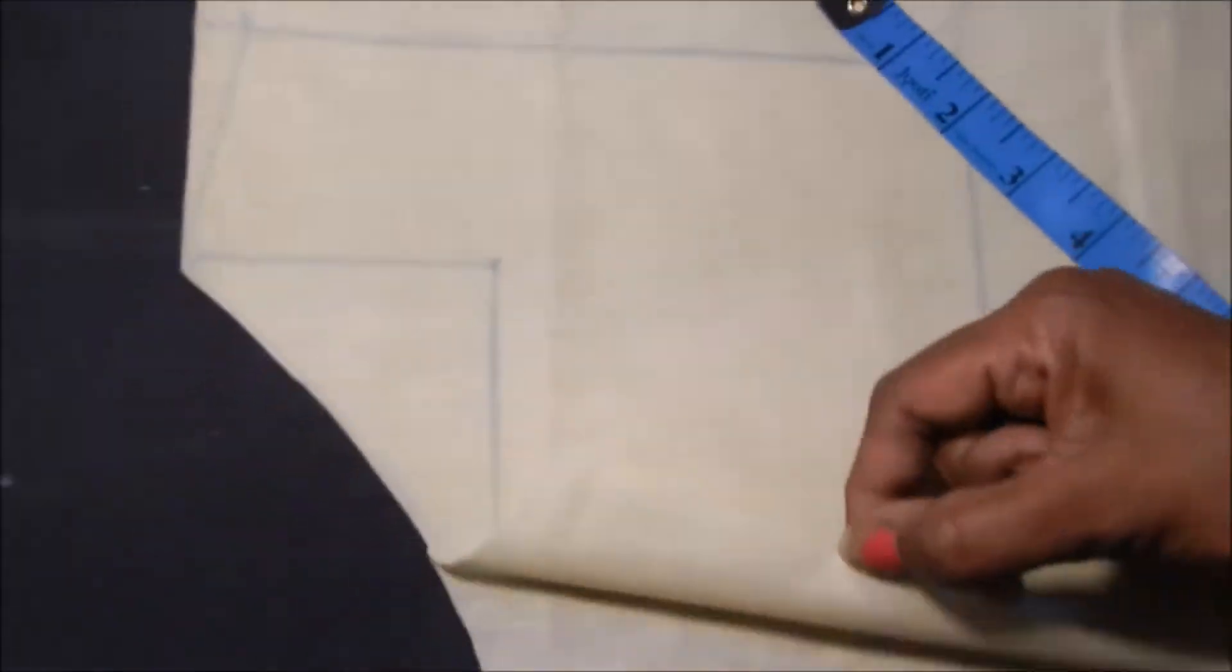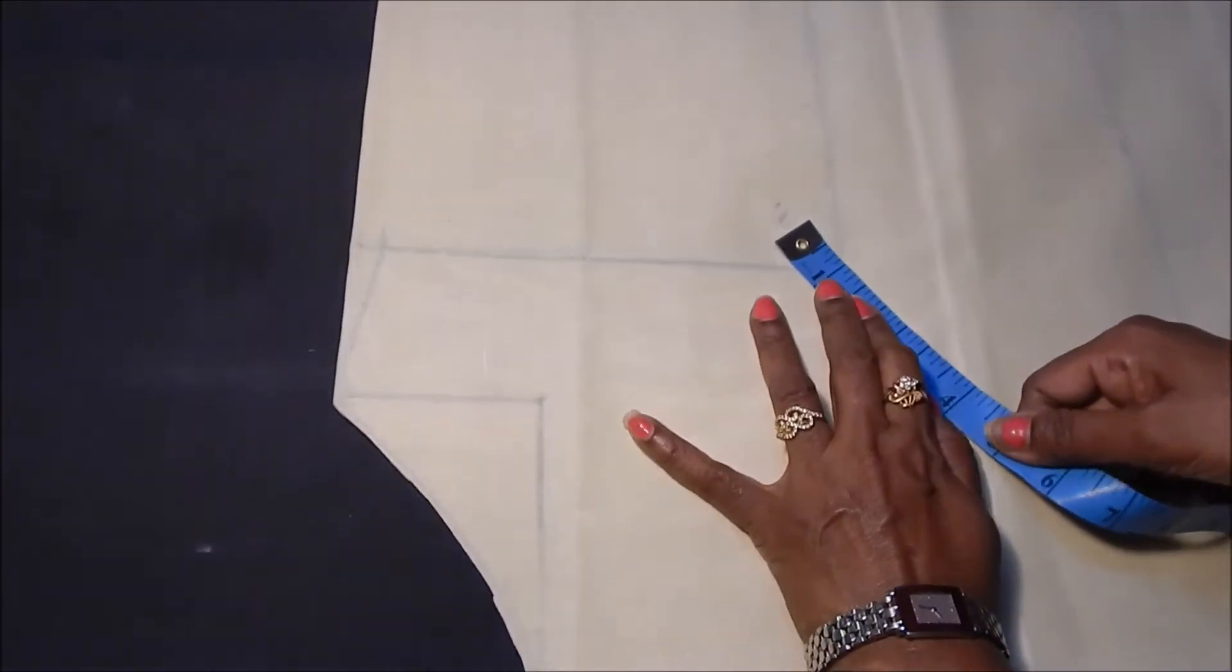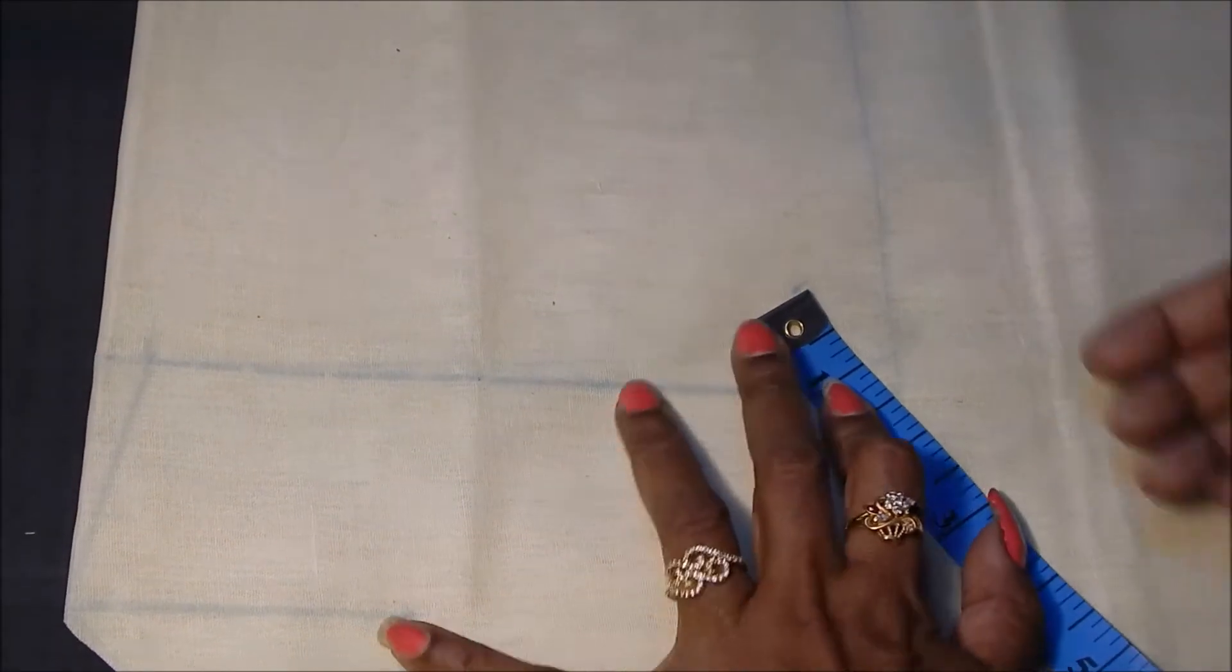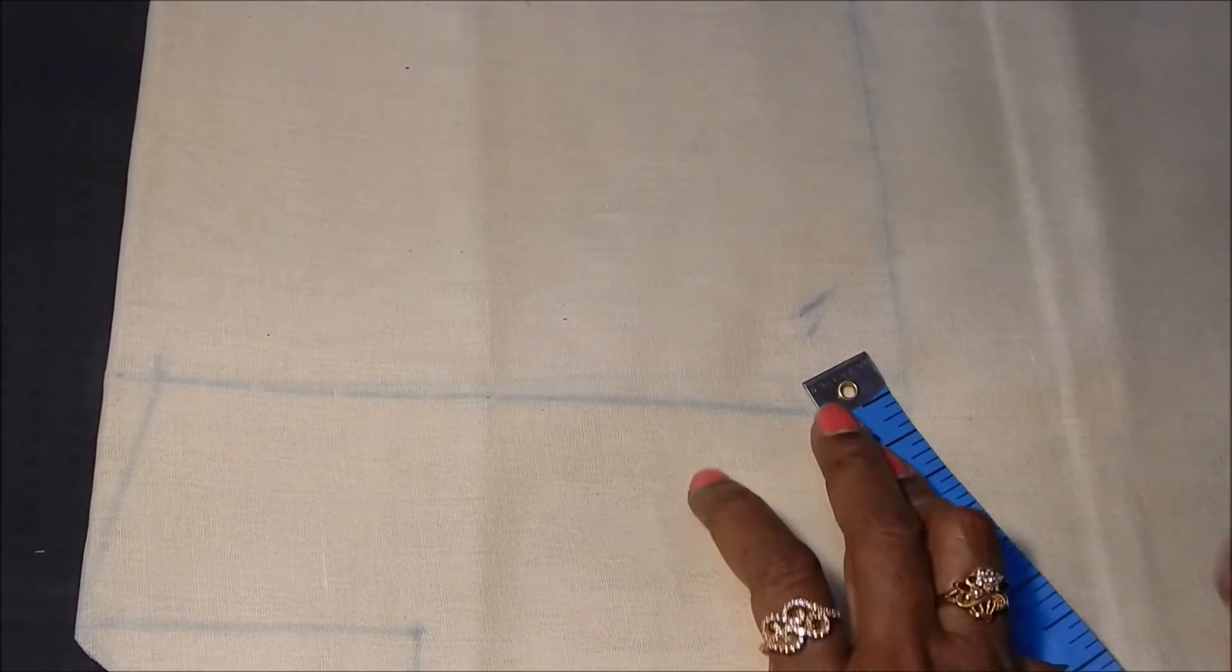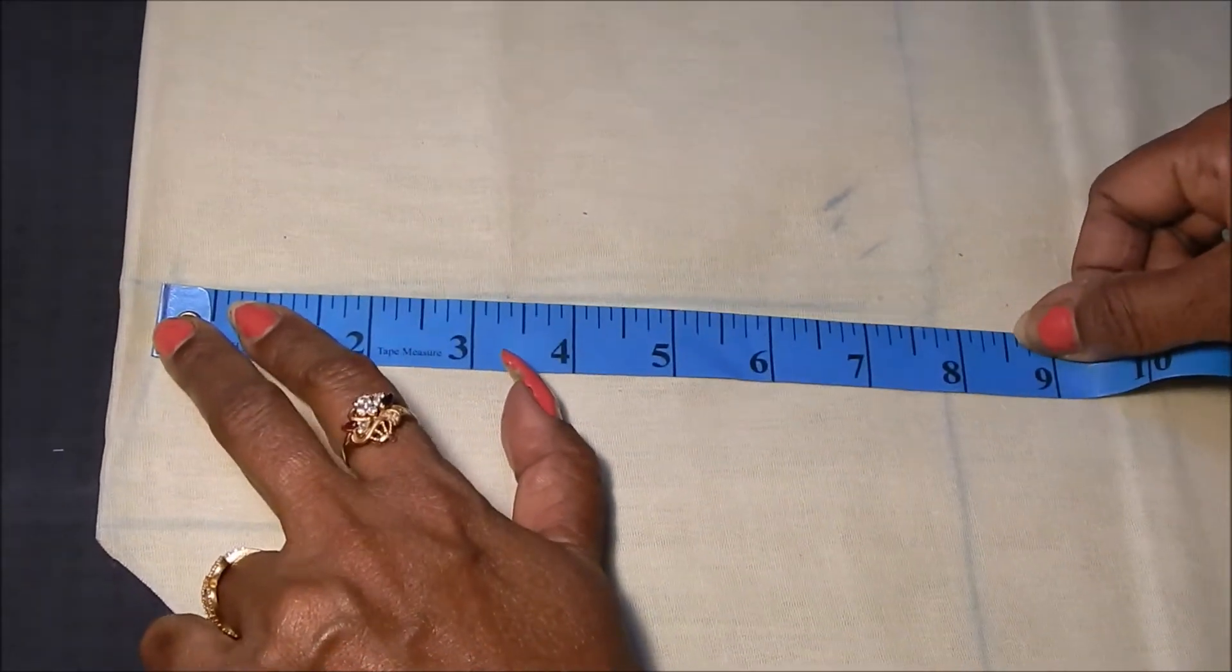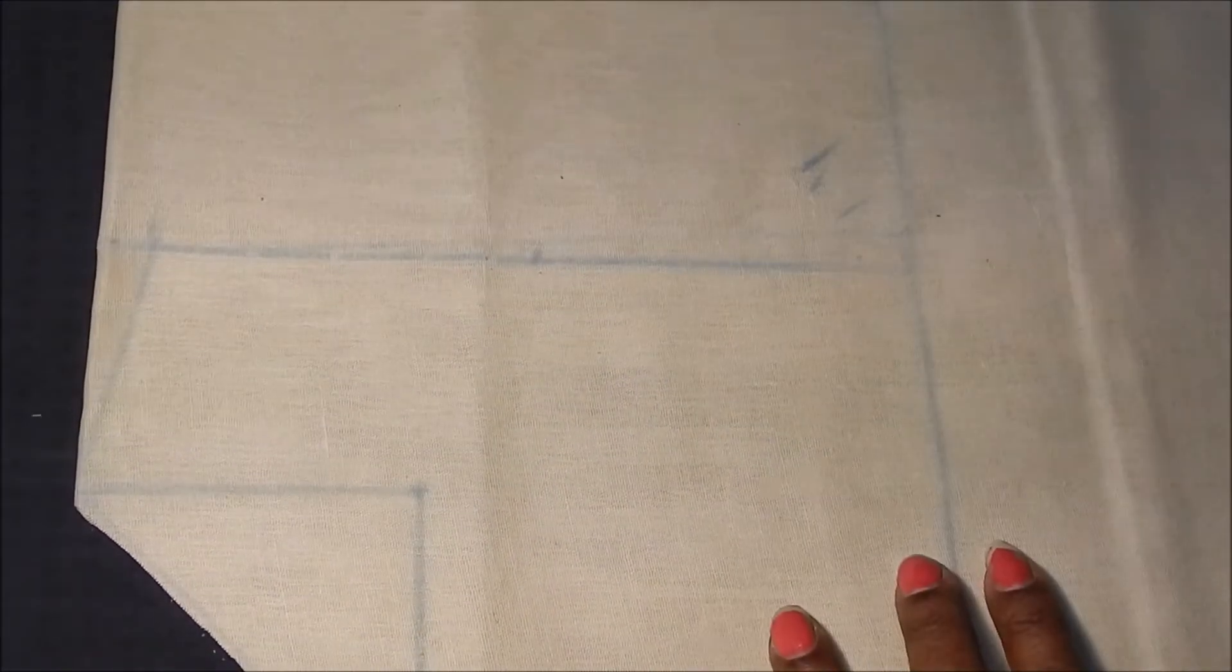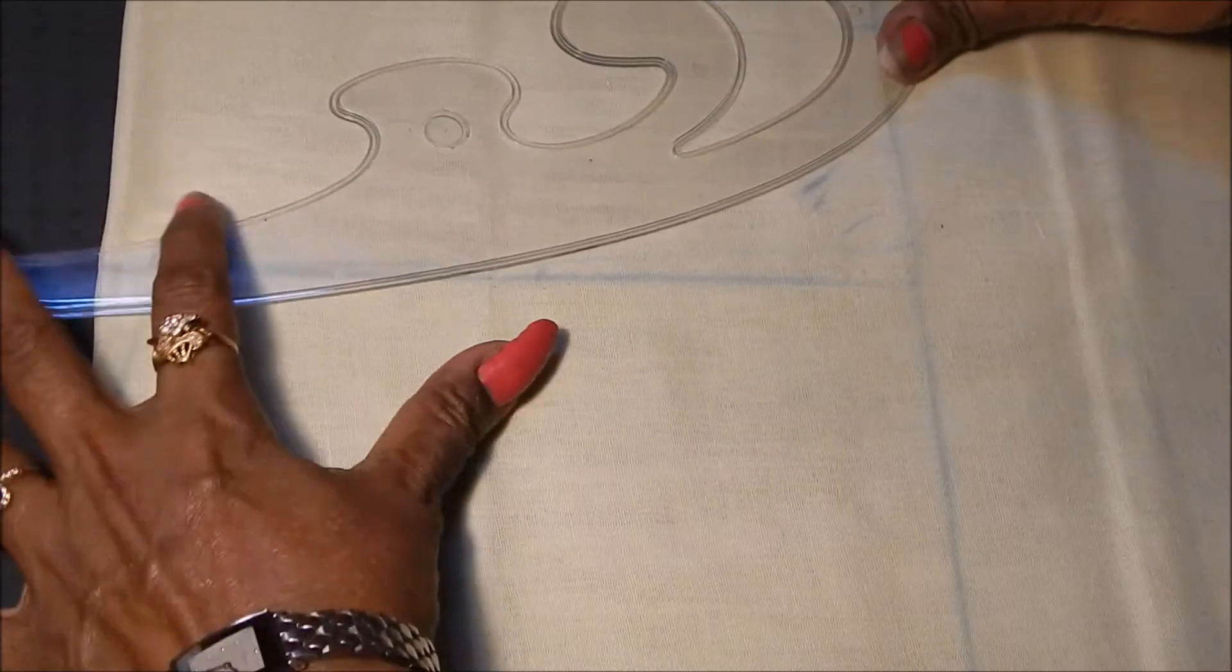Now we will mark from the corner of the armhole box. Mark back armhole at the distance of one and a half inches and for the front armhole three by four inches. Midpoint of the armhole length that is seven and a half inch, midpoint is 3.75. Now we will mark back armhole.